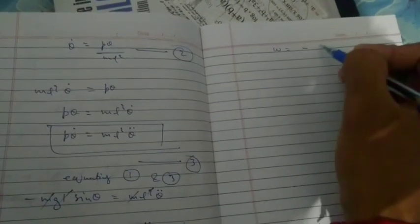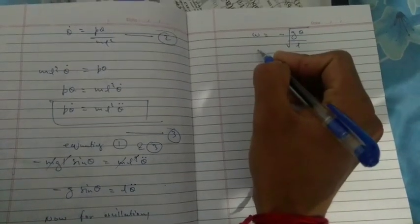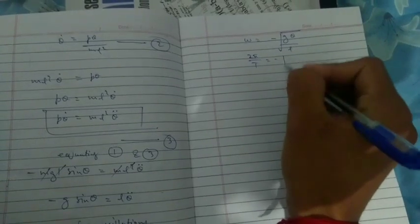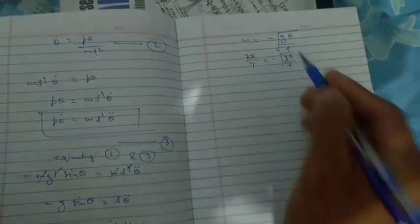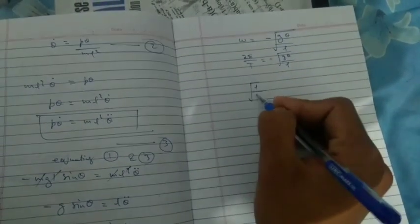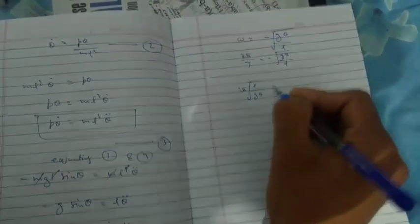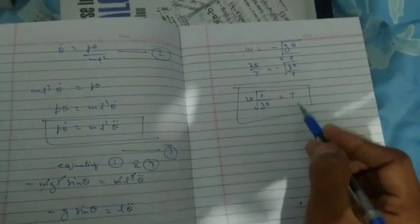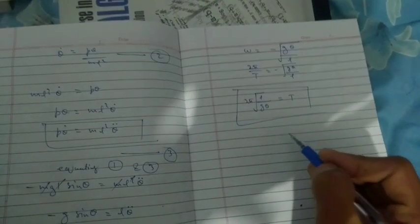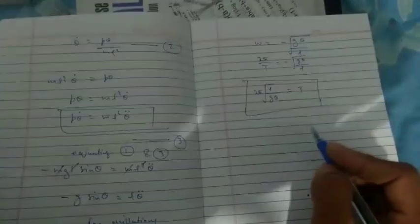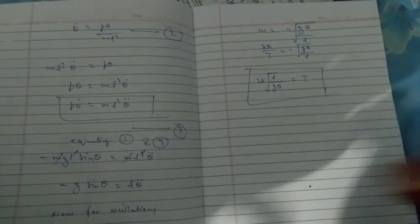So ω = √(g/l), and since ω = 2π/T, we can solve for the time period T. Since time cannot be negative, the required time period for performing small oscillations is T = 2π√(l/g). Thank you.